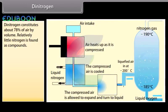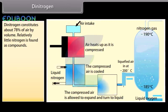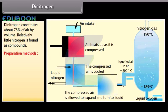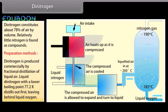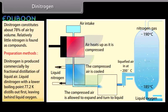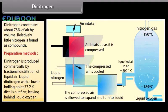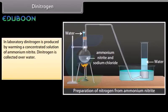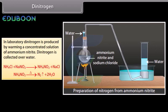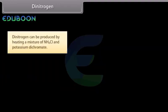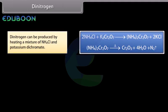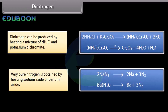Dinitrogen constitutes about 78% of air by volume; relatively little nitrogen is found as compounds. Dinitrogen is produced commercially by fractional distillation of liquid air — liquid dinitrogen, with a lower boiling point of 77.2 K, distills out first, leaving behind liquid oxygen. In the laboratory, dinitrogen is produced by warming a concentrated solution of ammonium nitrite, and can also be produced by heating a mixture of NH4Cl and potassium dichromate. Very pure nitrogen is obtained by heating sodium azide or barium azide.